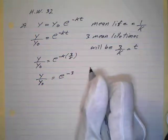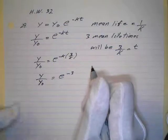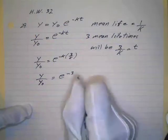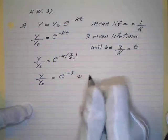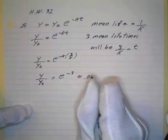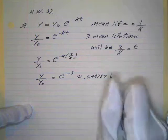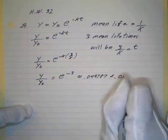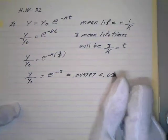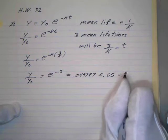So if you work that on your calculator, e to the negative 3 is going to be approximately point zero four nine seven eight seven, and that's definitely less than point zero five, which equals five percent.